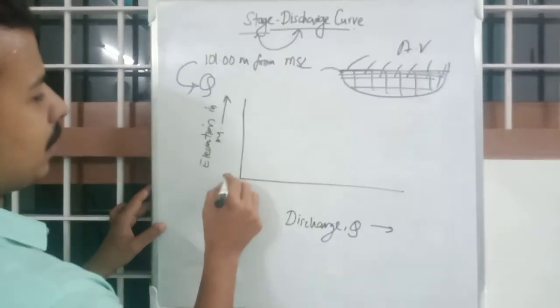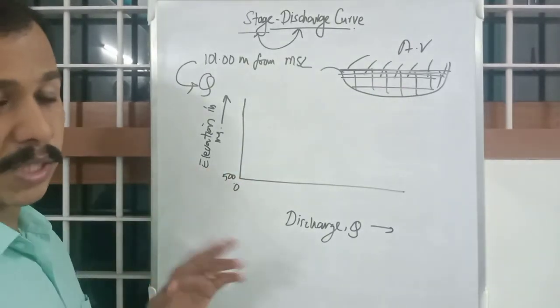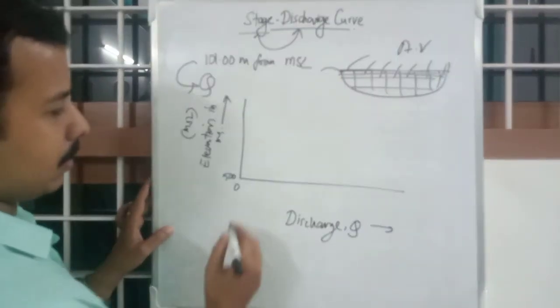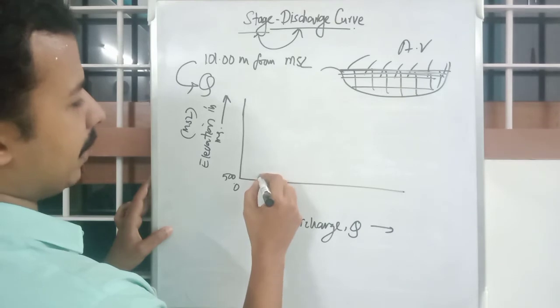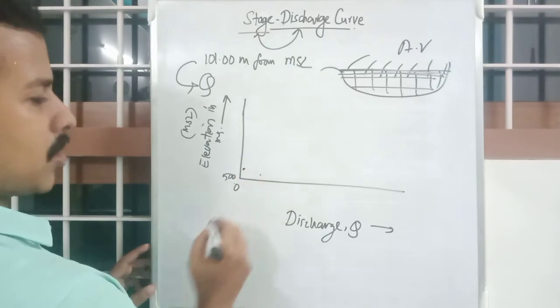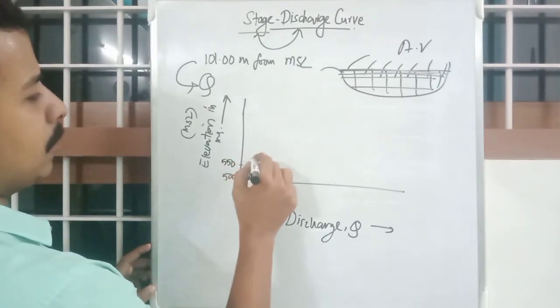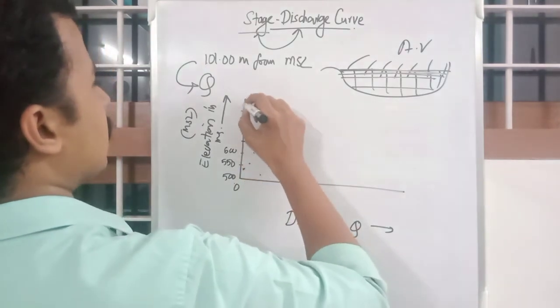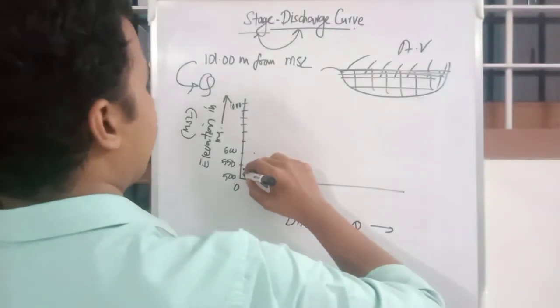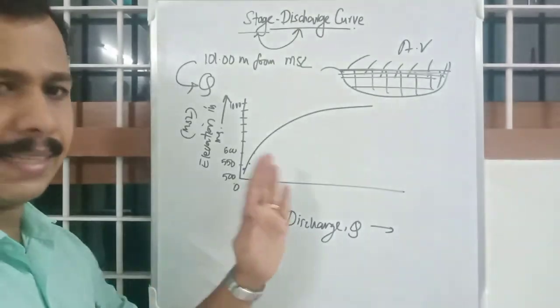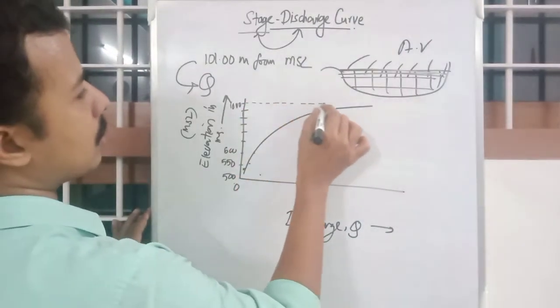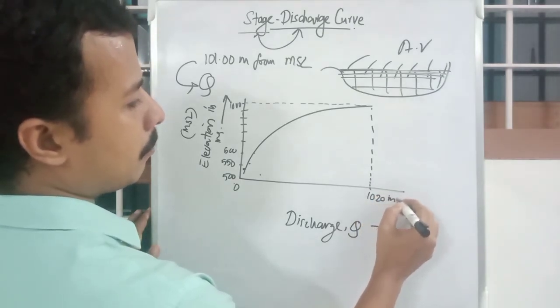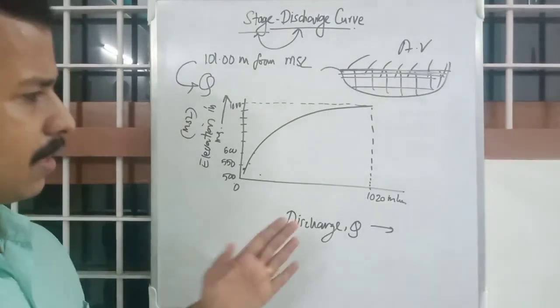So if suppose 500 is the elevation of a particular stream minimum elevation from MSL 500 is the elevation there will be a particular value of discharge that you have measured for 550 there will be a particular value for 600 there will be another particular value. So on the rating of all these values you will have a curve. See most probably like this and from each of these values 1000 stage height you will get a discharge of 1020 mega hectares or million hectares or any discharge value.